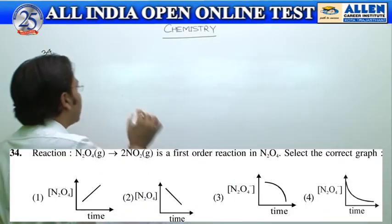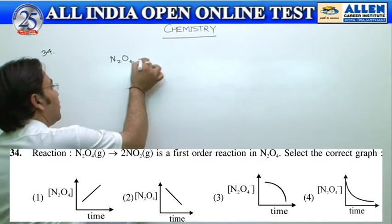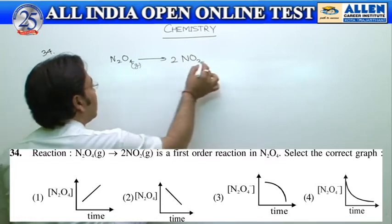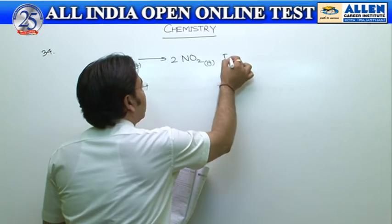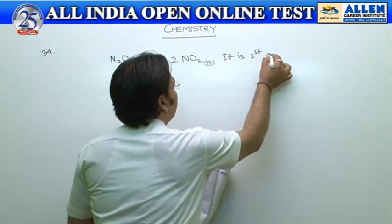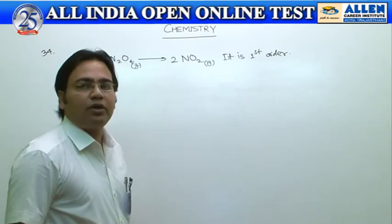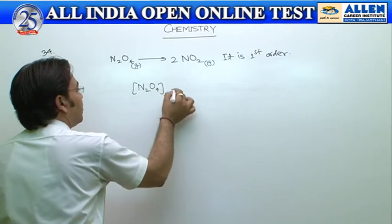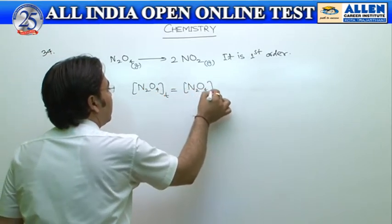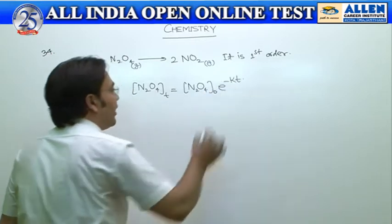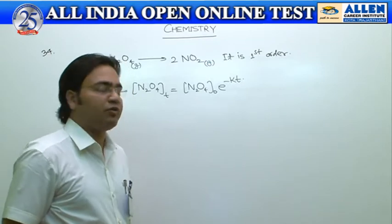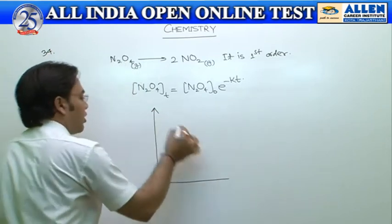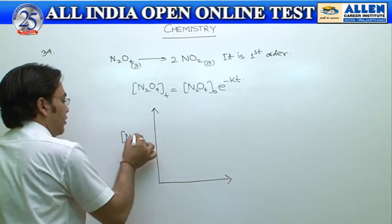In question number 34, a reaction is given. It is provided that this reaction is first-order. For a first-order reaction, we know from the Wilhelmy equation that the concentration of reactant varies with this equation, which is known as the Wilhelmy equation. Hence, when we draw a graph between the concentration and time...